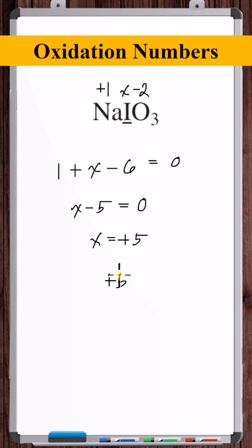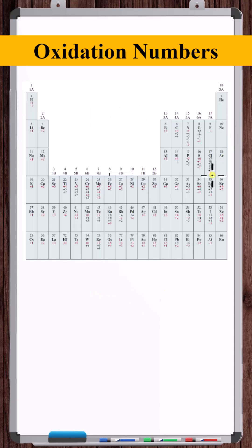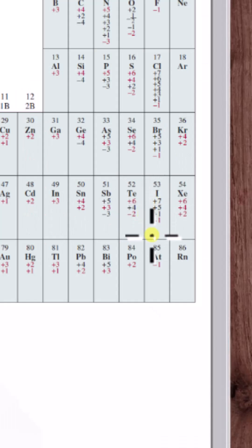So the oxidation number of the iodine is plus five. Looking at the oxidation number chart, that is one of the possible oxidation states of iodine.